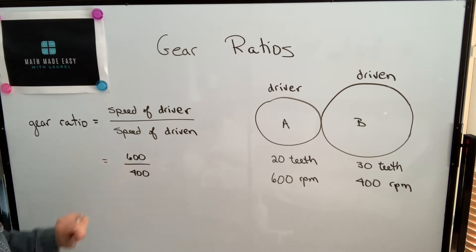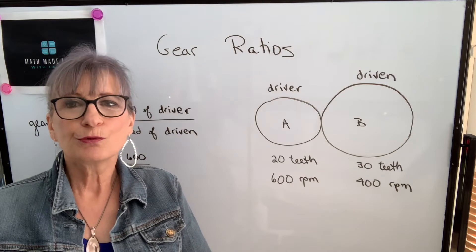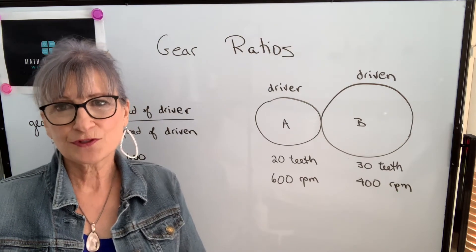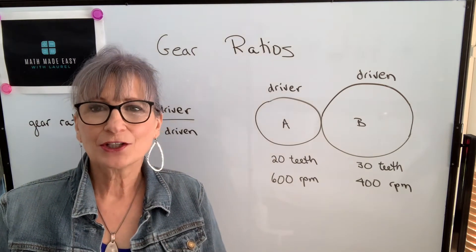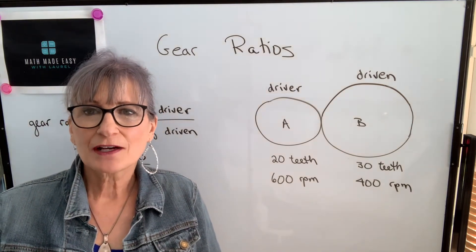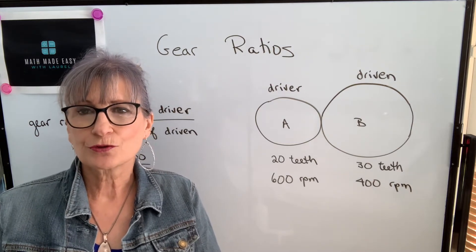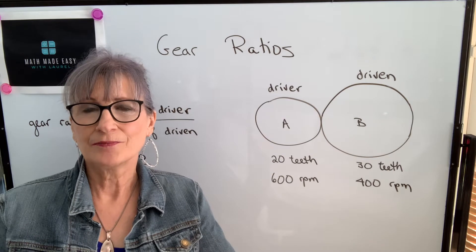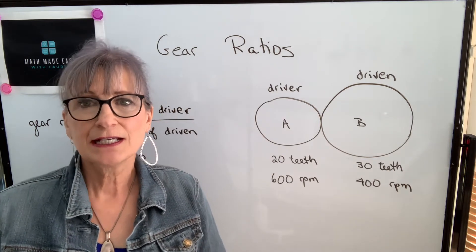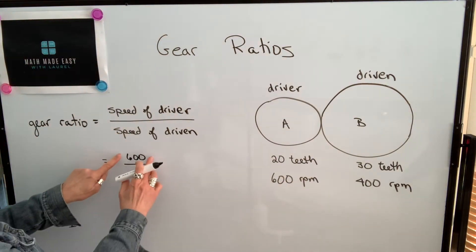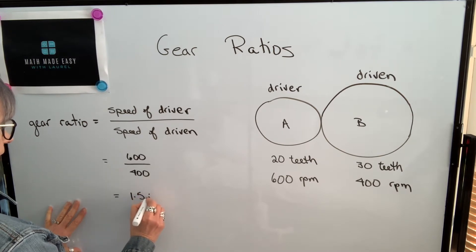We never leave ratios in this form. When you're working with ratios, usually you write them in the reduced form, so you could reduce this to 3 over 2. However, when we're looking at gear ratios, the accepted practice is not to write it in a reduced mathematical form, but to always express your gear ratio as something to 1. That way it makes it easier to compare one gear ratio to another. So we're going to divide 600 by 400 and get 1.5 to 1.